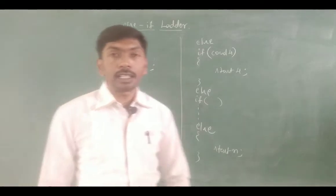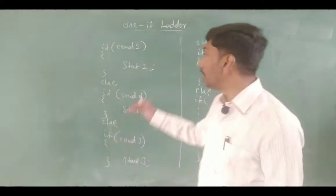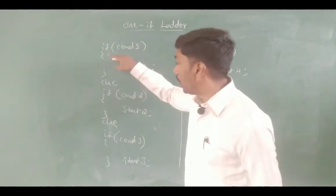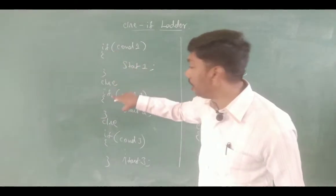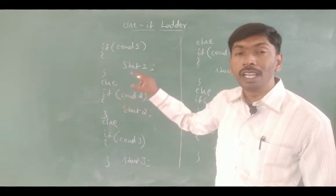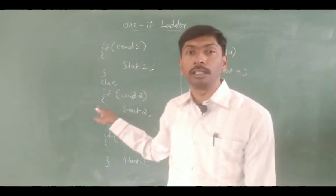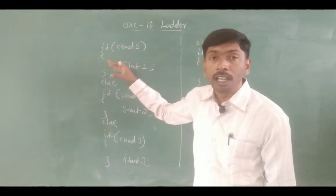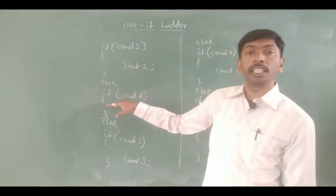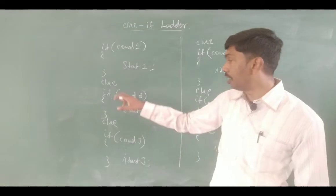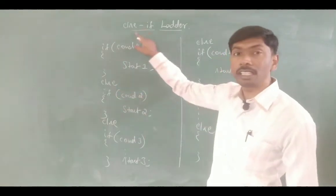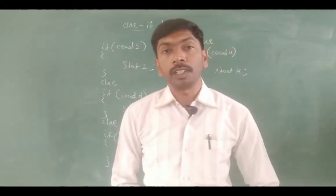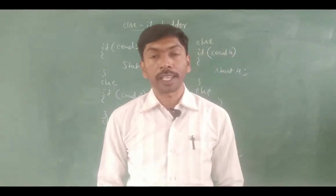This is called multi-way branching. Multiple times if-else, if-else, again if, again if — that is why it is called the else-if ladder. If the condition is false, again it goes for the else, again it checks the condition with else-if. Else-if ladder is also called a multi-way branching system.